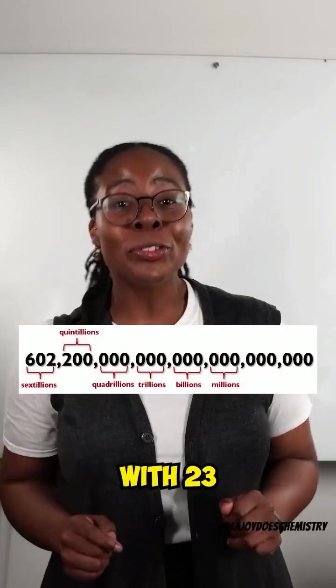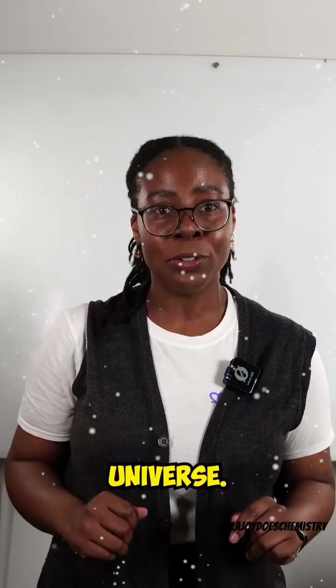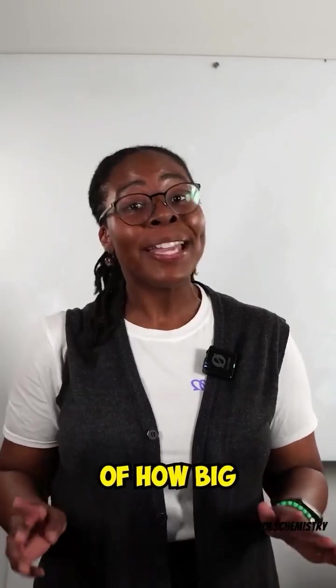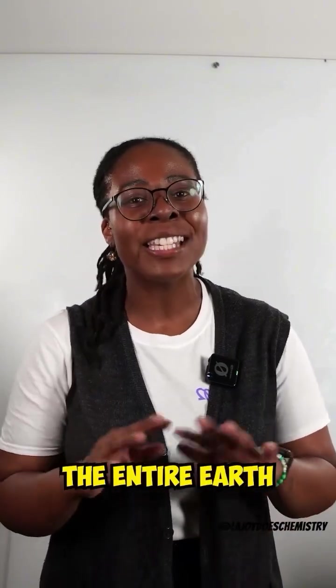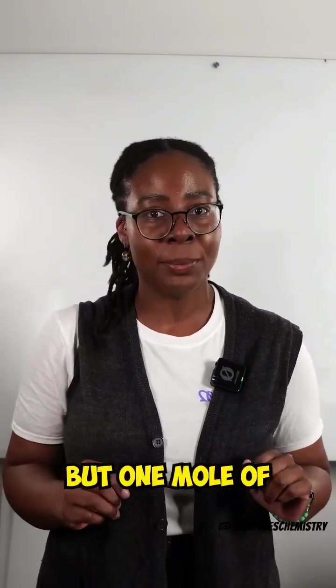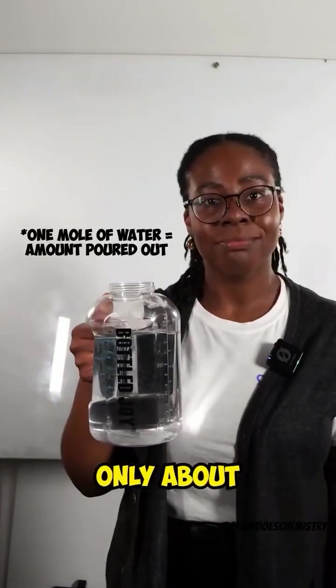That's six with 23 zeros after it. That's more stars than there are in the observable universe. To give you a better idea of how big that number is and how small atoms and molecules are, one mole of donuts would cover the entire Earth five miles deep. But one mole of water molecules is only about this much.